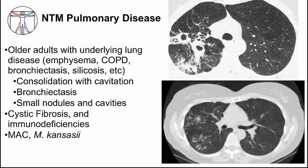Older adult females can present with pulmonary NTM similar to this nodular pattern. Pulmonary NTM can also occur in immunocompromised patients — some have a relative deficiency like cystic fibrosis, and these patients can also have predisposing structural lung problems like bronchiectasis. Some are severely immunocompromised, like patients with stem cell or organ transplant. The two most common NTMs causing pulmonary disease are MAC and M. kansasii.